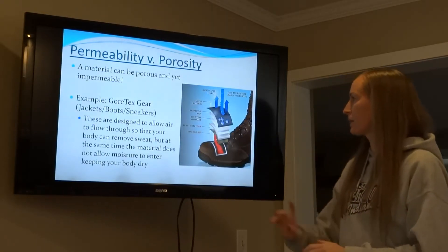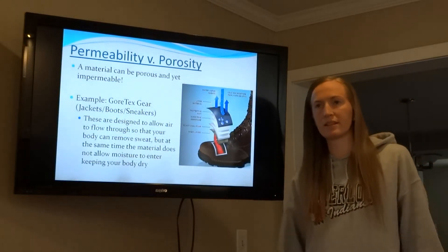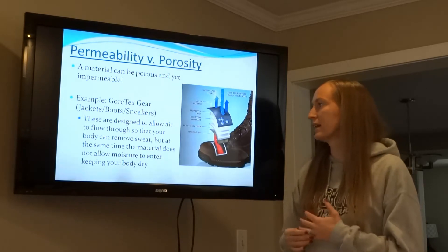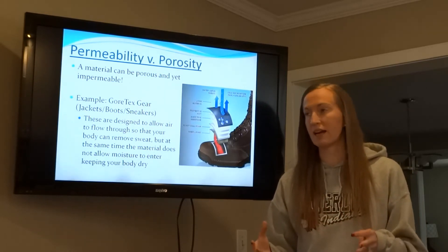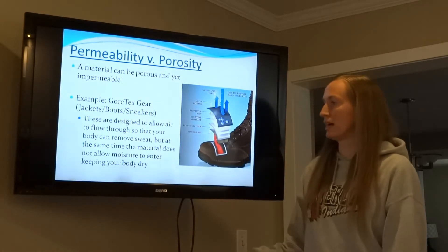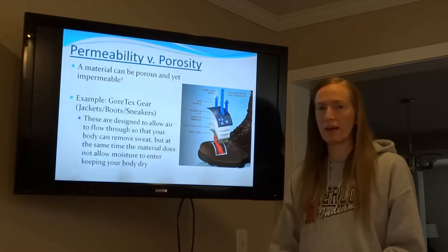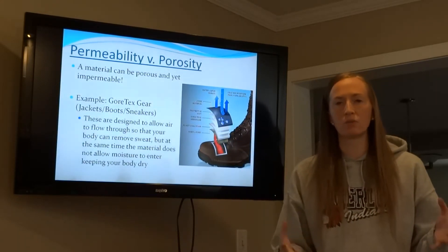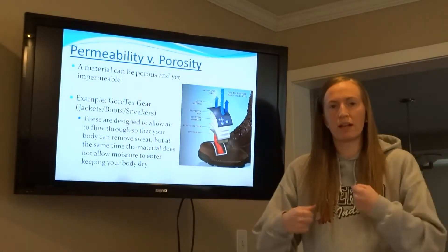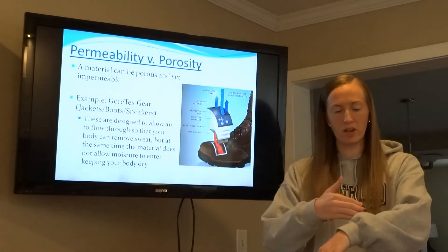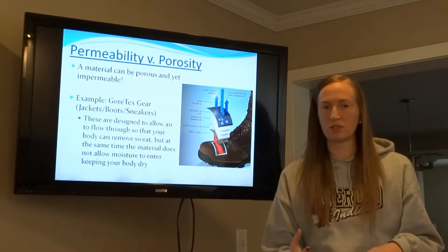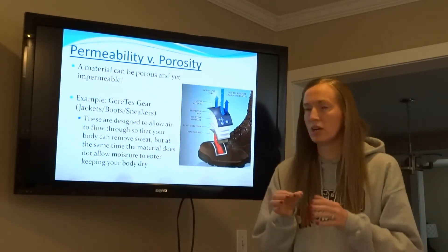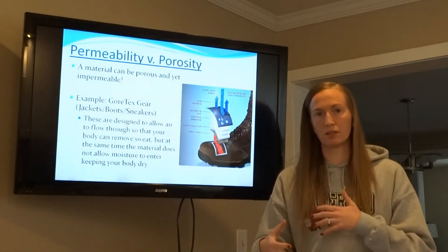Permeability versus porosity: here's the Gore-Tex example. Gore-Tex is an expensive material used in jackets, boots, and sneakers. It's designed to allow air to flow through so the body can remove sweat, but you don't get wet. In a Gore-Tex rain jacket, you can sweat and the air passes through, but water molecules cannot. An air molecule is smaller than a water molecule, so the holes in the fabric are just small enough to let air through but not water.